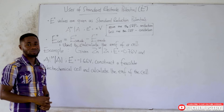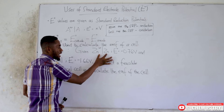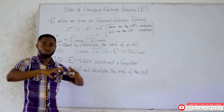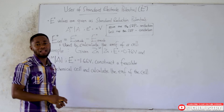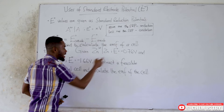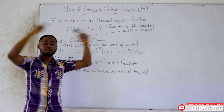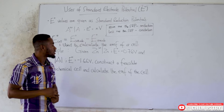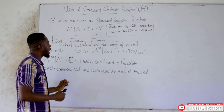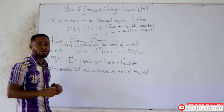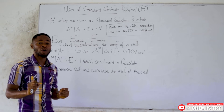We'll be doing two things: using the zinc half cell and the aluminium half cell to construct a feasible electrochemical cell, then based on the standard reduction potential values, we are going to calculate the total EMF the cell is supposed to give us. To perform this operation, we have to isolate our half cells and pick which one is the reduction half cell and which one is the oxidation half cell.